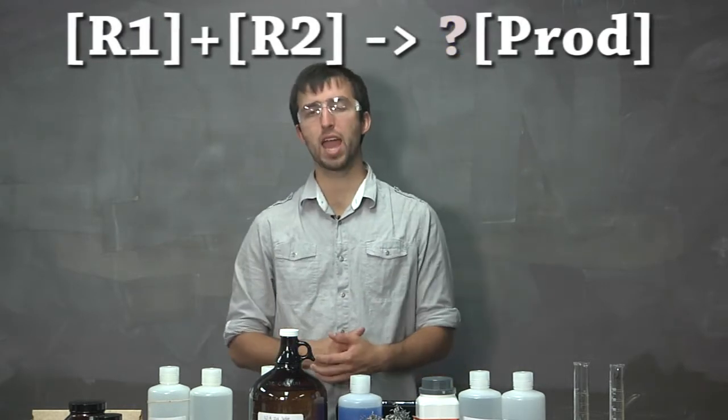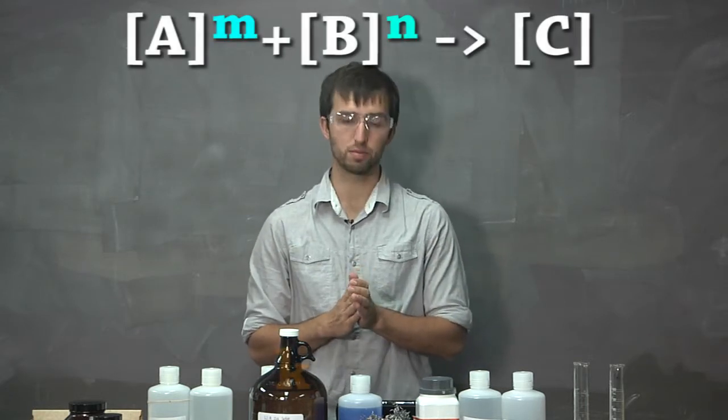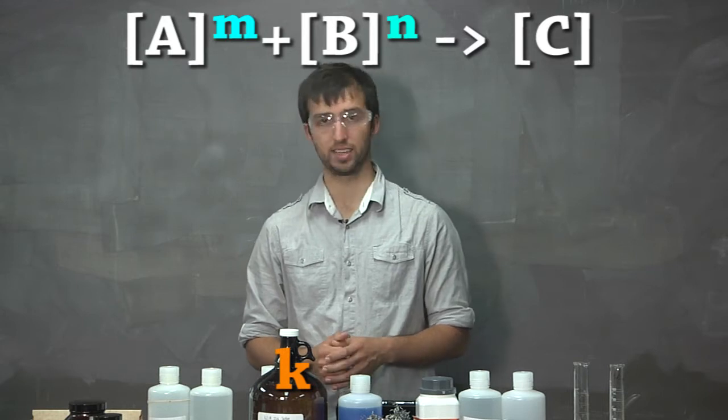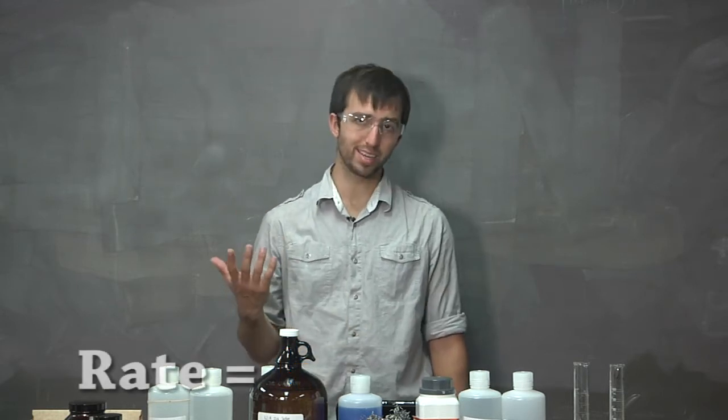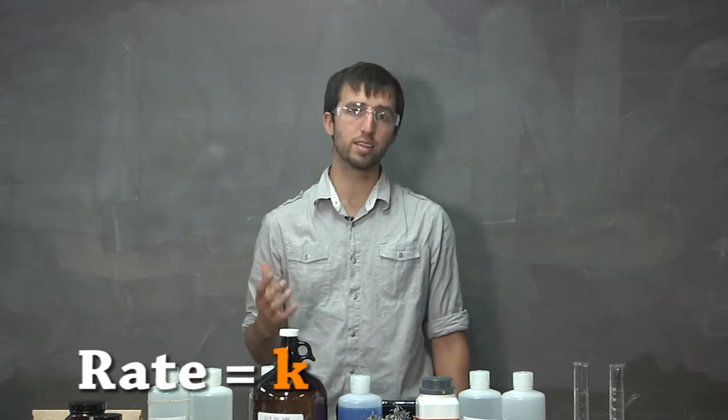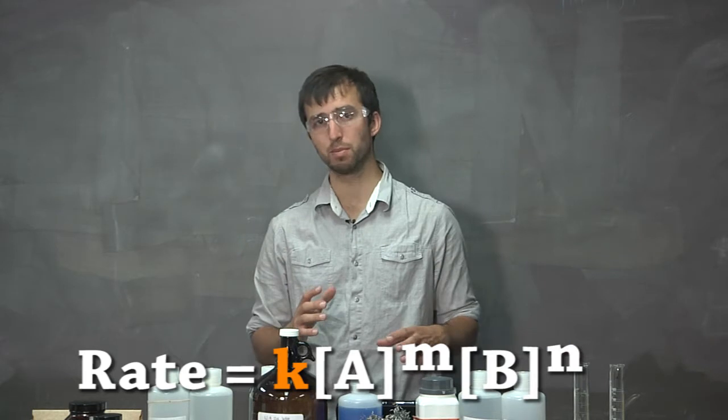The order of the reaction is given by the sum of all of the exponents of the reactants. K is normally used as the rate constant. So, if the rate is given as rate equals K times A to the power of M times B to the power of N,